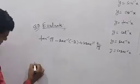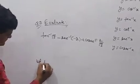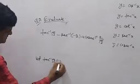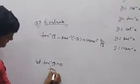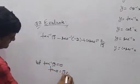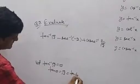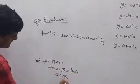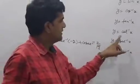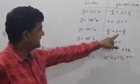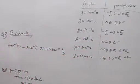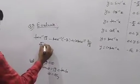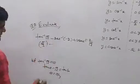Let tan inverse root 3 equal theta. Since tan 60° equals root 3, theta equals pi by 3. We check: for tan, the range is minus pi by 2 to pi by 2, and 60° is within that, so pi by 3 is valid.